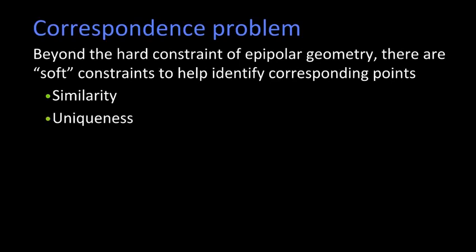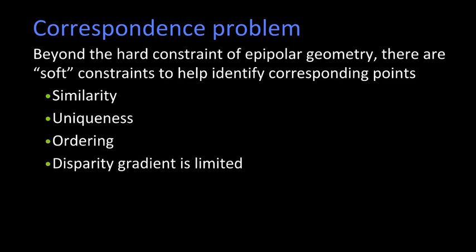Uniqueness says that there's no more than one match of a left pixel in the right image. Ordering says if pixels go A, B, C in the left image they go A, B, C in the right. And disparity gradient is limited. That means that the depth doesn't change too quickly. We'll talk about some of these today, but what we're going to start with is similarity.